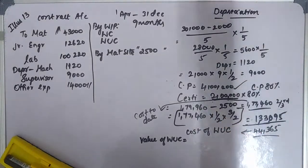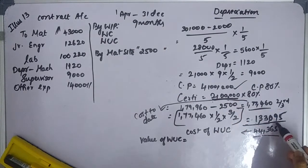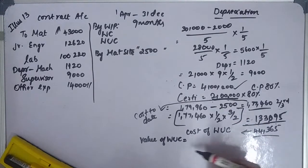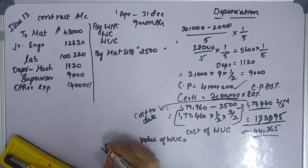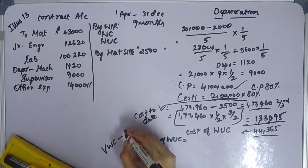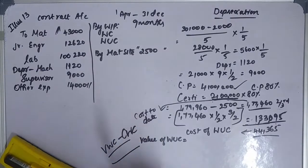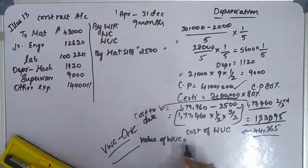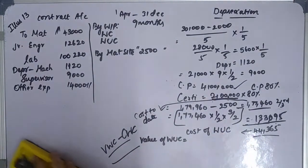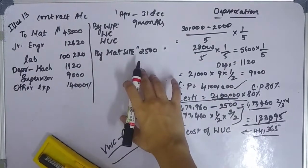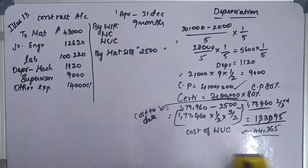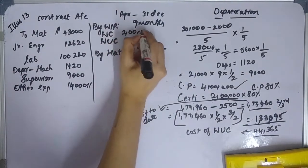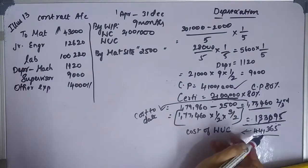Work certified is 2 lakhs. The value of work certified minus the cost of work certified gives us the notional profit on certified work. Work certified value is 2 lakhs and the cost of work certification is used in this calculation.